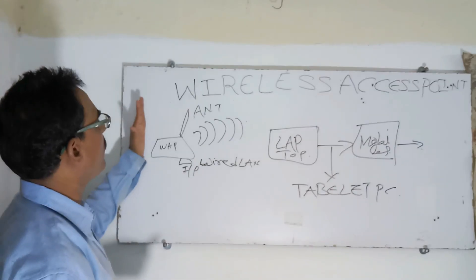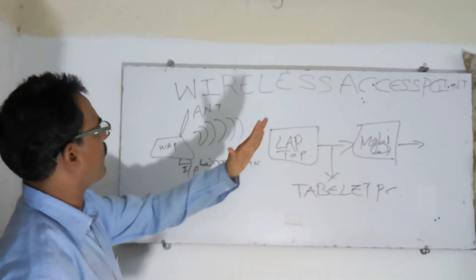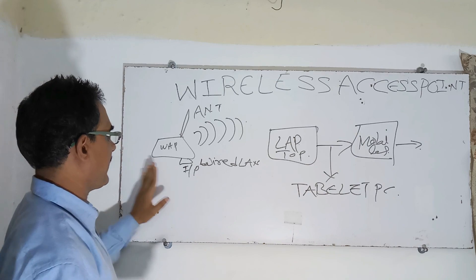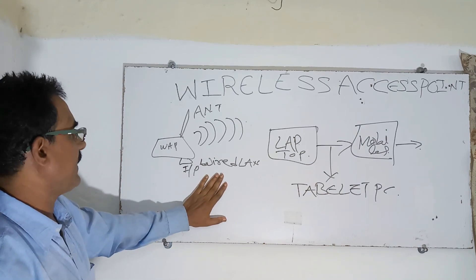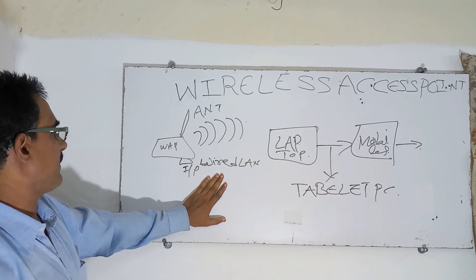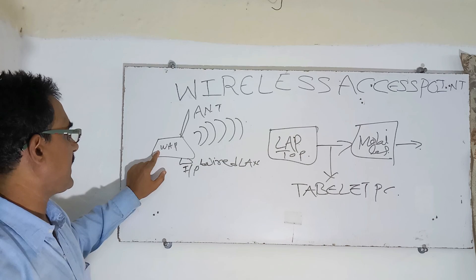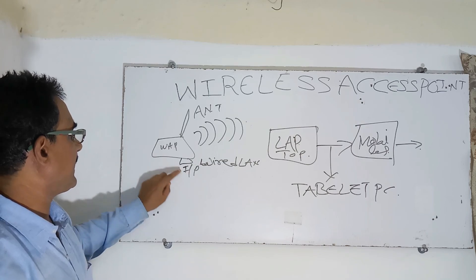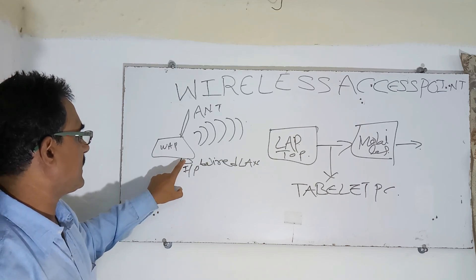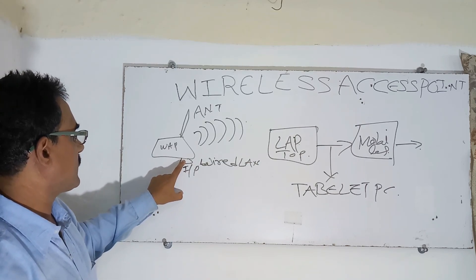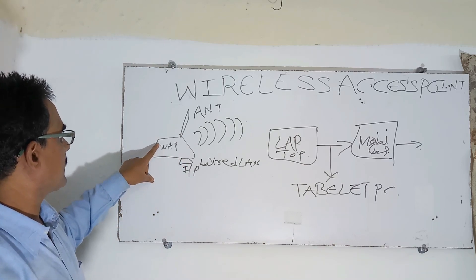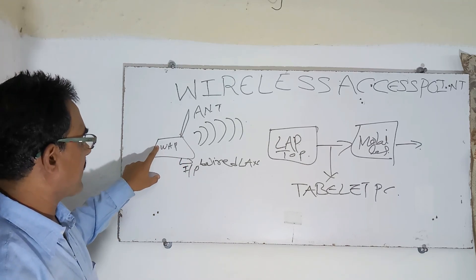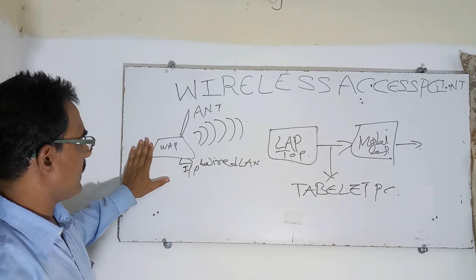The wireless access point requires first a wired LAN and internet connection. After that you can take one wireless router — the input circuit is RJ45 — and connect to this place.